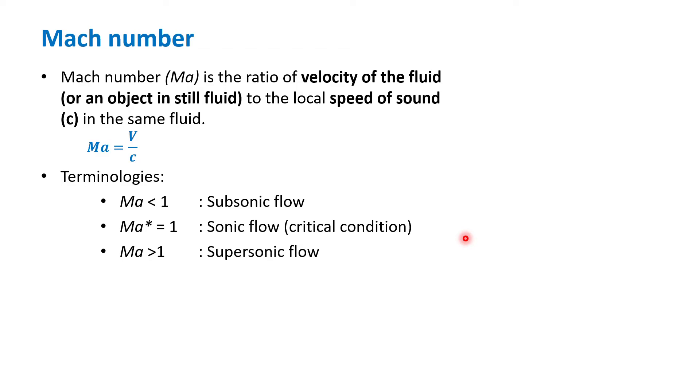Another important terminology is Mach number. What is Mach number? Mach number is defined as the ratio of velocity of the fluid or an object in a still fluid to the local speed of sound c as we defined before. This definition can be written mathematically as Ma equals v, the velocity, divided by c, the speed of sound. Based on this definition, we know that Mach number has no unit.